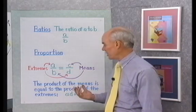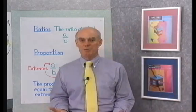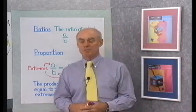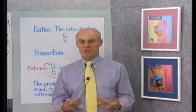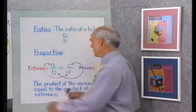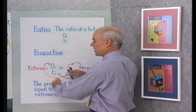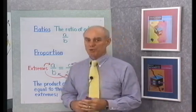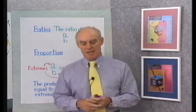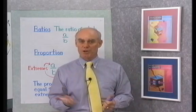Some people call that cross multiplication. I like to say the product of the means is equal to the product of the extremes, or you can say it the other way around. The product of the extremes is equal to the product of the means. This product right here and this product right here are always equal in any proportion. That's the property that allows us to solve proportions for one of the missing terms.